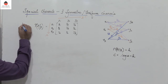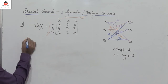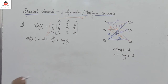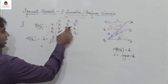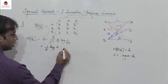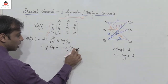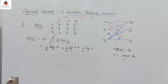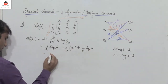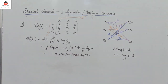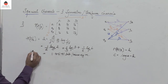Let's take an example: for the given channel matrix, find the channel capacity. We know h of y given x is a constant h, equal to the sum from j equal to 1 to 3 of p(j) log(1/p(j)). So it's (1/2) log base 2 of 2, plus (1/3) log base 2 of 3, plus (1/6) log base 2 of 6. Computing this gives h of y given x equal to 1.4591 bits per message symbol.